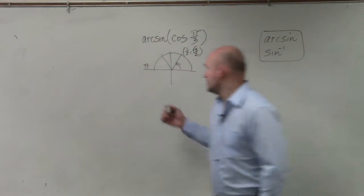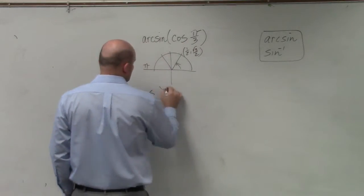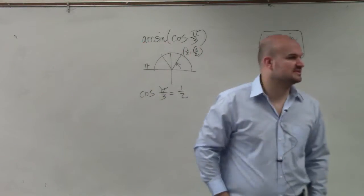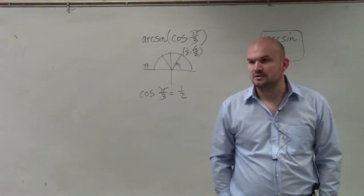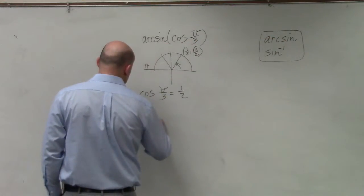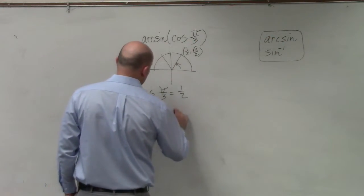Right? So we could say that the cosine of pi over 3 is equal to 1 half, just like we did for our warm up. Does everybody follow me and agree with me? Is everybody OK with that? OK. So now we have the arc sine of 1 half.